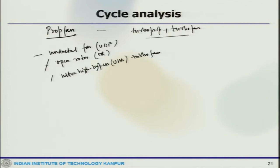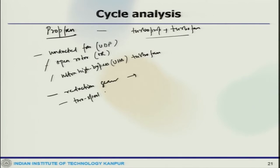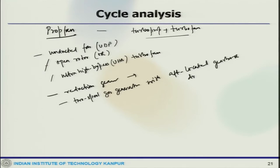The propeller fan is designed to operate with a turbine engine using a single-stage reduction gear, resulting in high performance. The design is intended to offer the performance of a turbo fan with the fuel economy of a turbo prop. The most common arrangement is a two-spool gas generator with an aft-located gearbox driving a pusher fan. This fan produces the majority of the thrust, with a number of blades greater than turbo prop but less than the turbo fan.